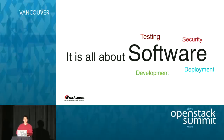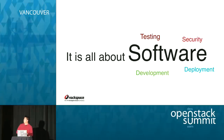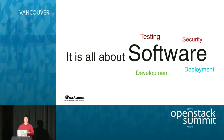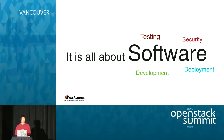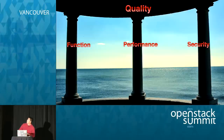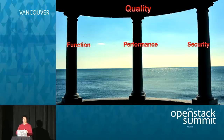If you attended the keynote by Jonathan, you'll remember he mentioned everything about software. OpenStack is a platform that lets people run software. We give this to our customers; our customers run their software. During the process, our developers also create software, and as testers we test software. As security engineers, we check the security of the software. In Rackspace, security engineering belongs to quality engineering. We strongly believe that quality includes three things: functionality, performance, and security.